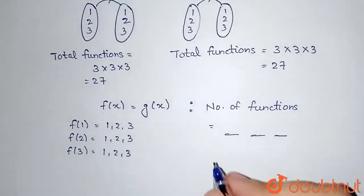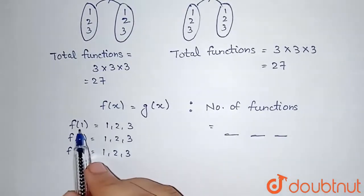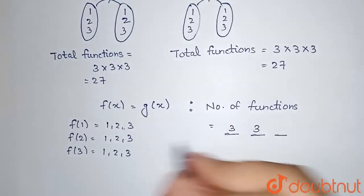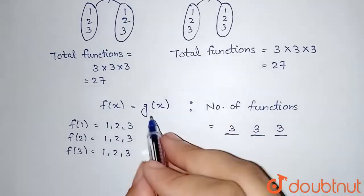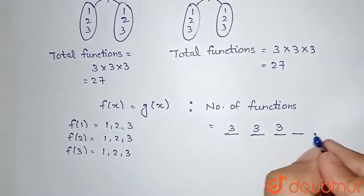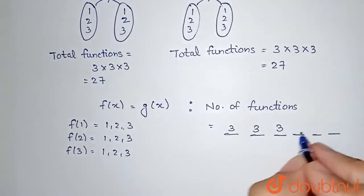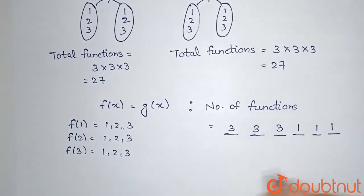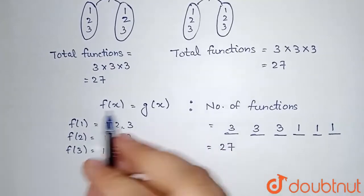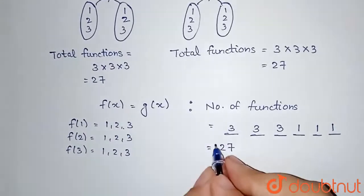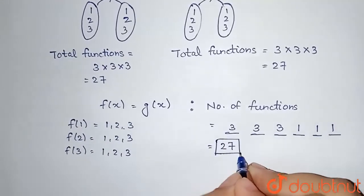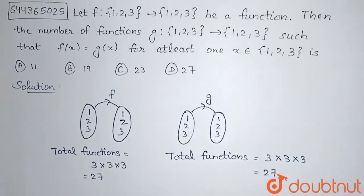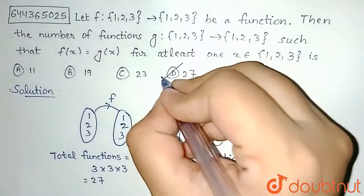For this condition f(x) = g(x), we have three places: f has 3 options each for positions 1, 2, and 3, but g(x) has only 1 option since f(x) is fixed. Therefore the total number of functions such that f(x) = g(x) is 27, which is option D — the correct answer.